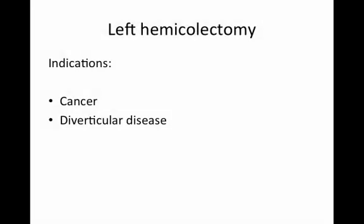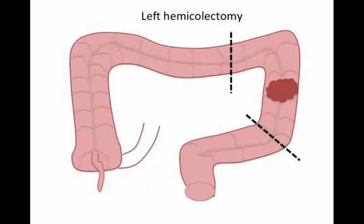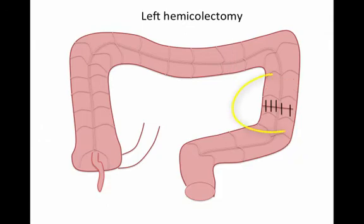Left hemicolectomy is an operation most commonly performed in the elective setting, commonly for cancer or diverticular disease and its complications. The outcome is usually a primary anastomosis. You can see a malignancy affecting the left hemicolon, with proximal and distal cuts made within the colon, and following this we most commonly see a primary anastomosis.